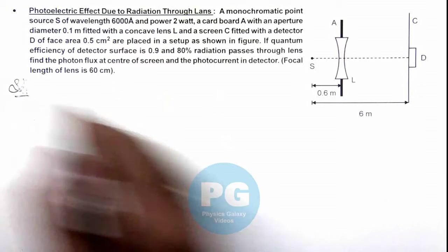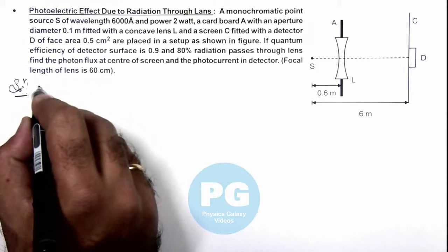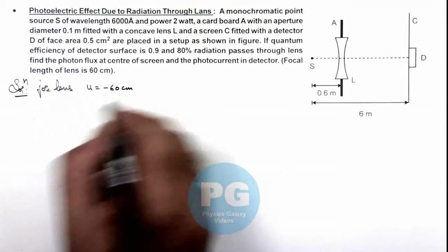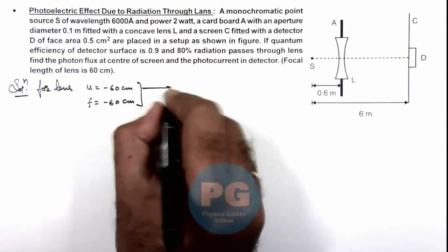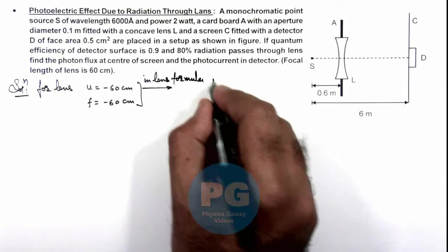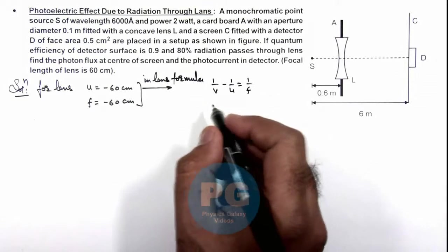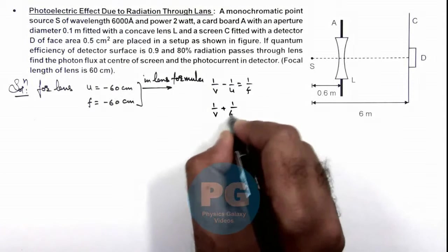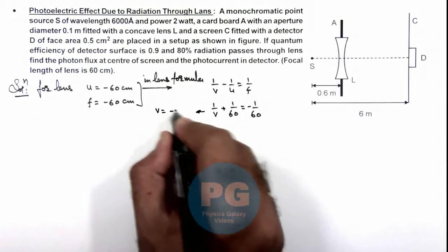First, the lens is placed at 60 centimeters from the source. For the lens, we use u = -60 cm and focal length f = -60 cm. Applying the lens formula: 1/v - 1/u = 1/f, and substituting the values: 1/v + 1/60 = -1/60, which gives us v = -30 centimeters.